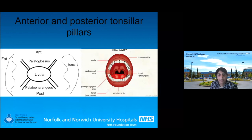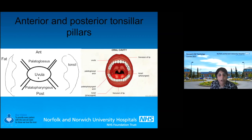On the diagram, cutting through in the axial plane with somebody opening their mouth, you can see the uvula and the palatine tonsils. In front of the palatine tonsil is the anterior tonsillar pillar, and behind is the posterior tonsillar pillar. The anterior tonsillar pillar is the palatoglossus muscle, and the posterior tonsillar pillar is the palatopharyngeus muscle. The palatine tonsils lie between these anterior and posterior pillars.